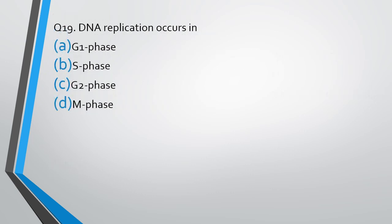Question number 19. DNA replication occurs — this is a very common question of AIIMS or NEET. DNA replication occurs in which phase? G1 phase, S phase, G2 phase, or M phase? The correct answer is option B, that is S phase.